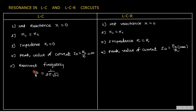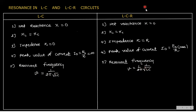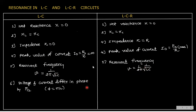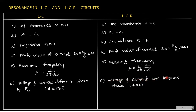Resonant frequency is the same in both LC and LCR: ν equals 1/(2π√LC). In LC, voltage and current differ in phase by π/2, so φ equals π/2. Whereas in LCR, voltage and current are in the same phase, so phase difference φ equals zero, because the circuit behaves as a pure resistive circuit.